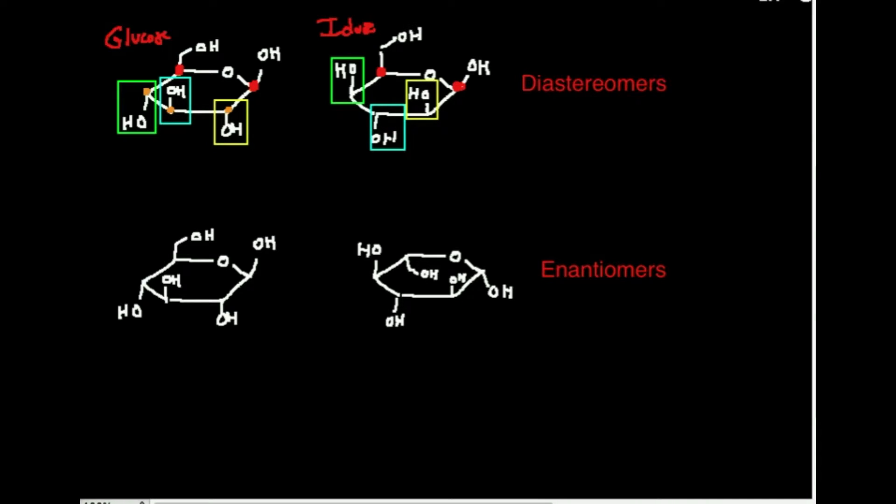But notice, and I'll go ahead and label these again by number. Here's one, two, three, four, and five. And then one, two, three, four, and five. If I look at positions two, three, and four, notice they do change. Look at two on glucose versus eidos. Two on glucose is down, two on eidos is up. Three on glucose is up, three on eidos is down. Four on glucose is down, four on eidos is up. So notice that positions one and five are constant between the two of them, so not all of them are different, not all of them are opposite, but some of them are opposite. Three out of the five are opposite.